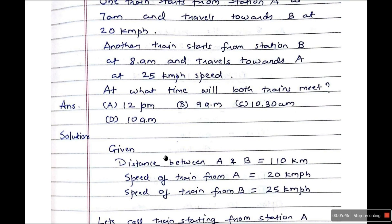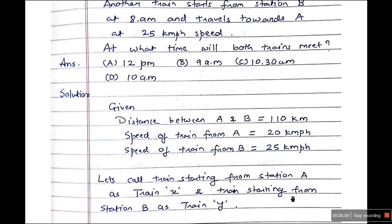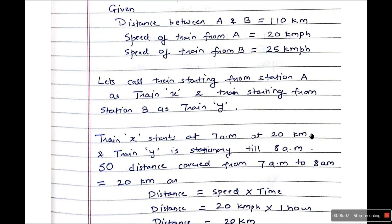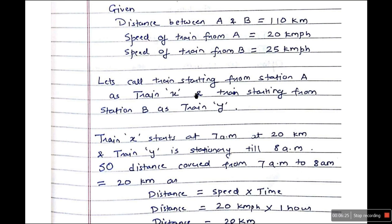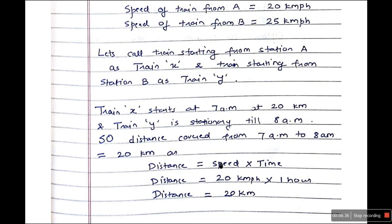The distance between the two stations is 110 km. Speed of train A (which we'll call train X, starting from station A) is 20 km per hour. Speed of train B (train Y, from station B) is 25 km per hour. Train X starts at 7 am; train Y starts at 8 am. From 7 am to 8 am, only train X is moving at 20 km per hour, so the distance covered in that hour is 20 km. Train Y is not moving at all yet, so total distance covered is 20 km.